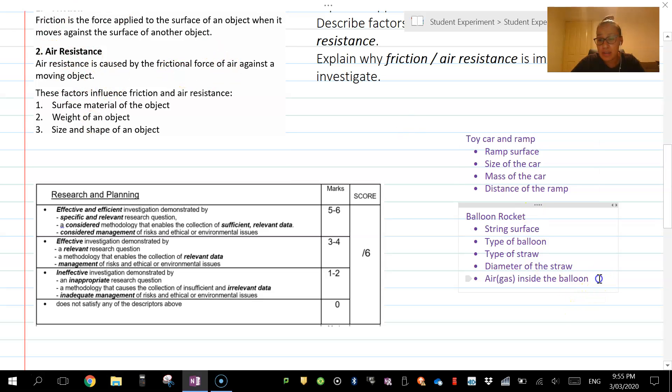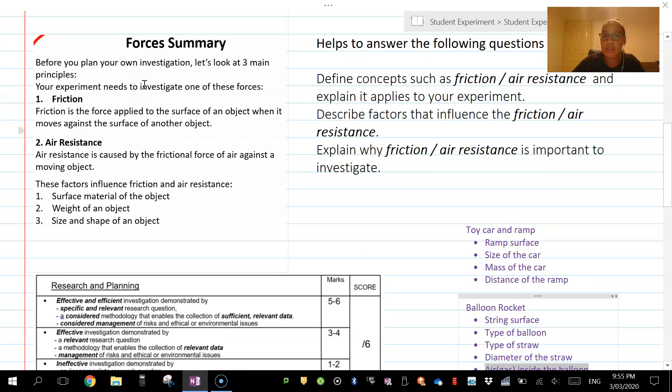For example, this one here—the air and the gas in the balloon. Yes, it's a reasonable research question: does the type of air affect distance traveled? It potentially could. However, it doesn't really link back to what we're looking at, which is friction, forces, and air resistance.